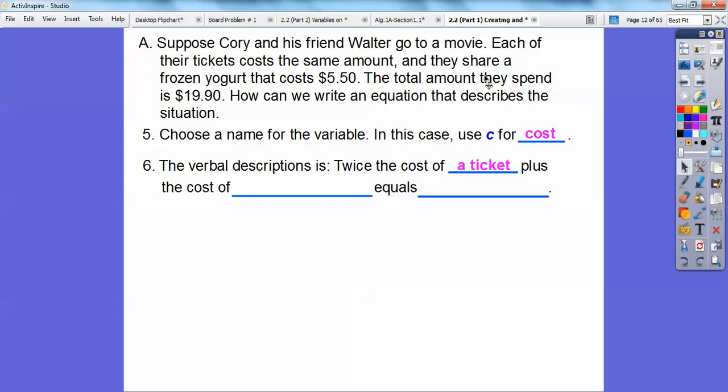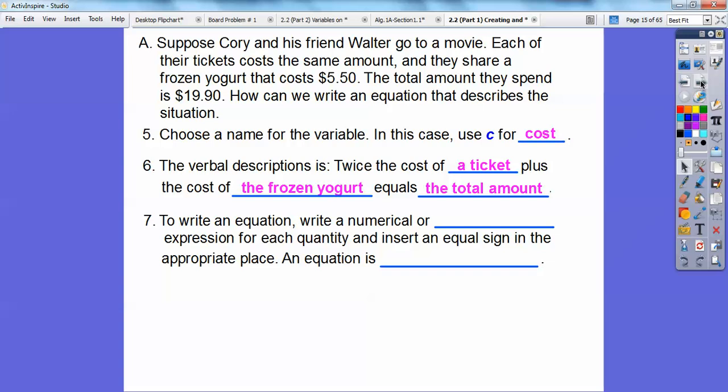Remember they both each bought a ticket there. So here's some more questions. Choose a name for the variable. In this case we're going to use C for the cost of the ticket. And the variable description is twice the cost of a ticket because both of them went to the movie and they both bought a ticket plus the cost of a yogurt equals the $19.50 or the total amount of money right there.